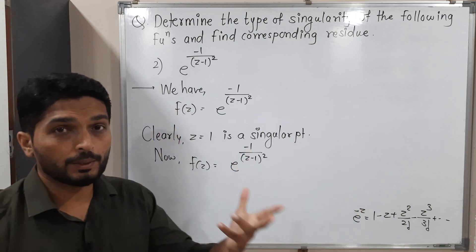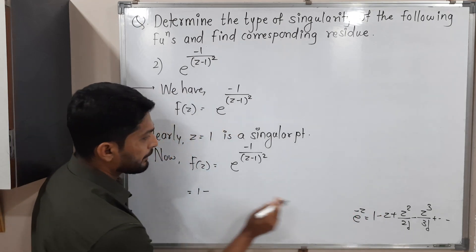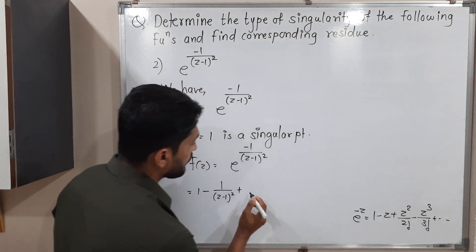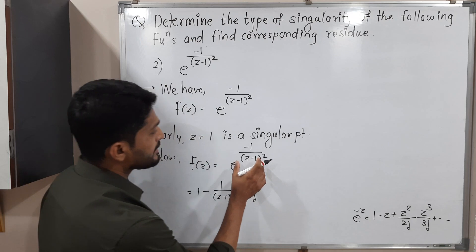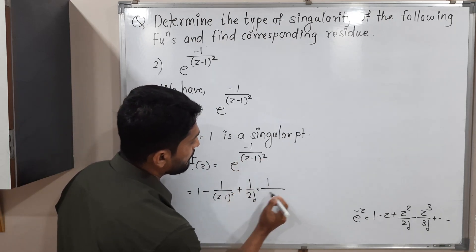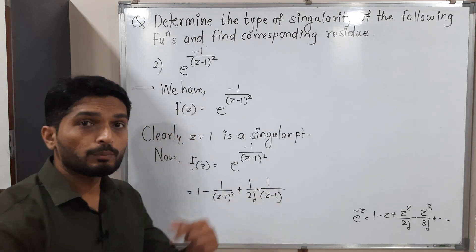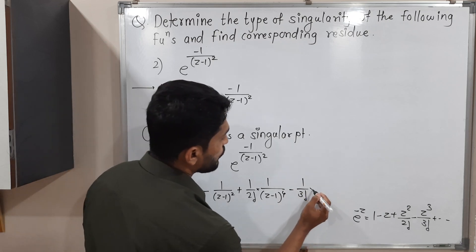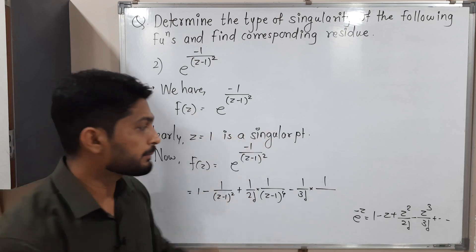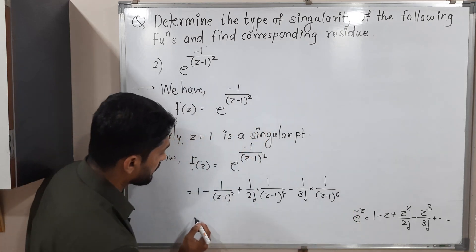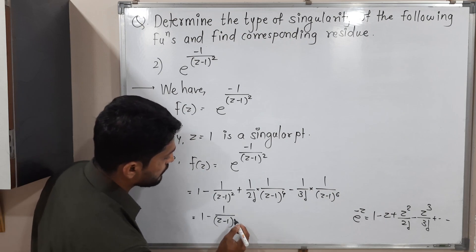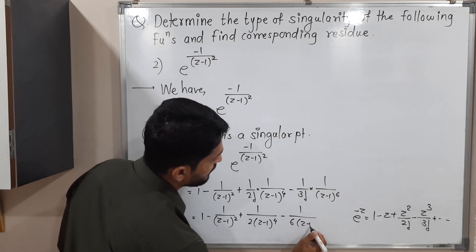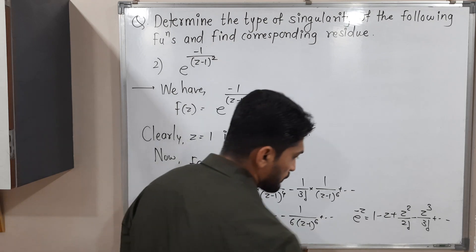Replacing z with −1/(z−1)² in the expansion: f(z) = 1 − 1/(z−1)² + 1/(2!·(z−1)⁴) − 1/(3!·(z−1)⁶) + ... and so on. This is the Laurent series expansion.